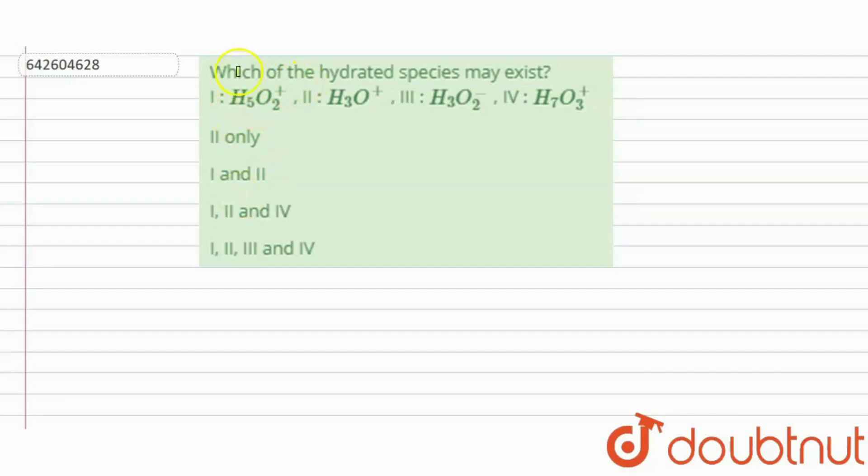Hi everyone, let's take a question here. The question says which of the hydrated species may exist? So here we are given four species and we have to tell which of the following will exist as hydrated species.